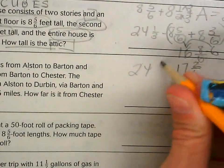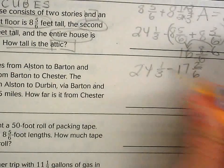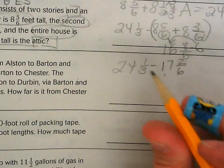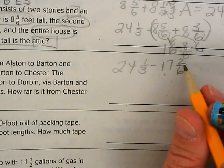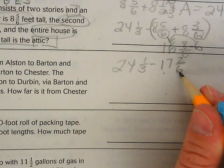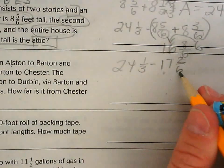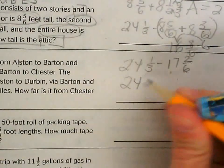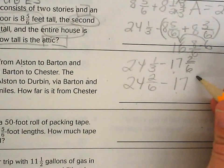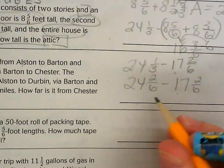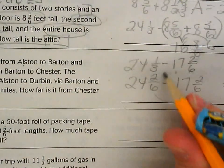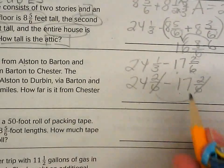So 24 and 1/3 minus 17 and 2/6. Now again I need to have a common denominator. They should be able to realize that 2/6 can go back down into 1/3, or 1/3 can go up to 2/6. So 24 and 2/6 minus 17 and 2/6. Clearly my fraction parts are going to cancel each other out. So now I'm just subtracting 24 from 17.